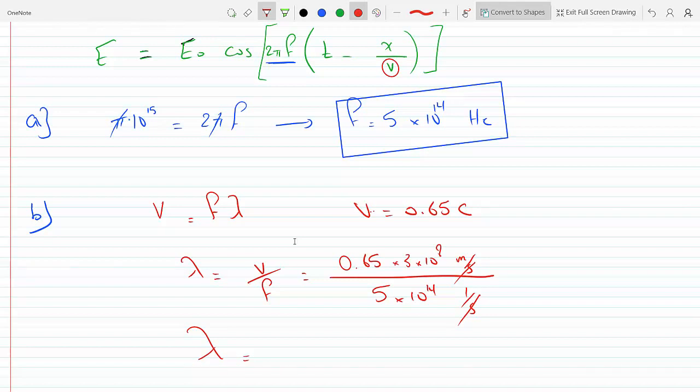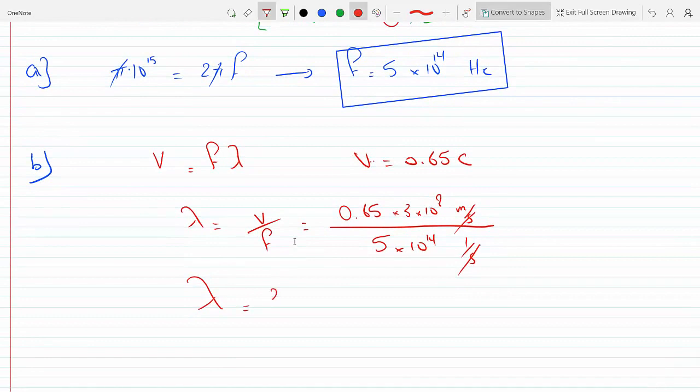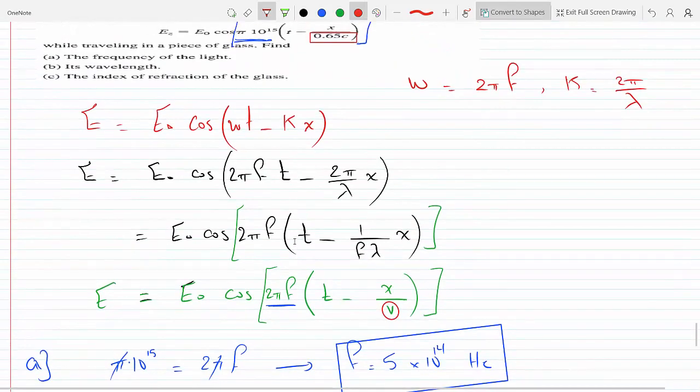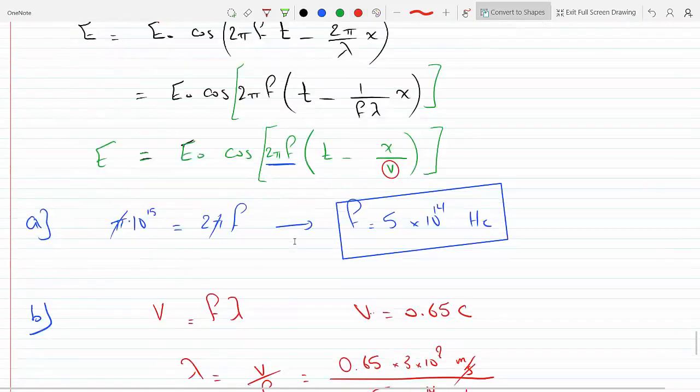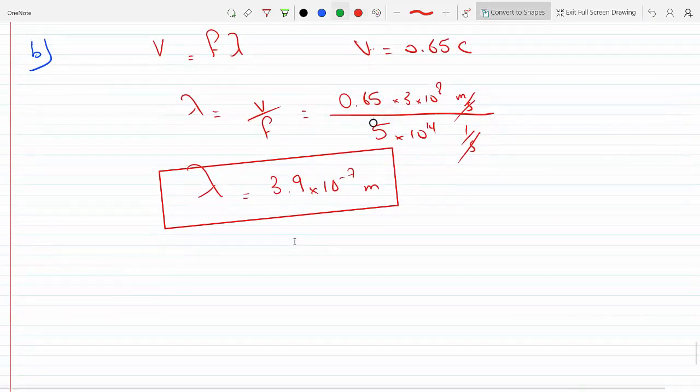We get 3.9 times 10 to the minus 7 meters. So this is our wavelength. And then the third part is, what's the index of refraction of the glass? That also seems to be quite straightforward.